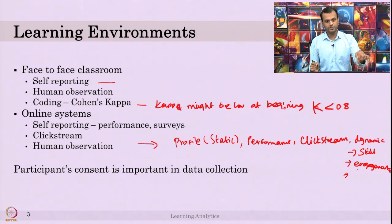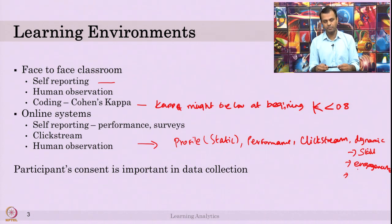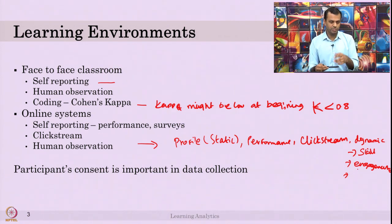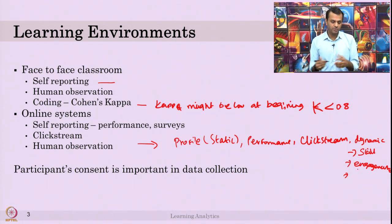Even in online systems, you do human observation — capturing videos of facial expressions, or data from eye trackers. If you have facial expression data, you may not be able to code it directly; you can ask students to self-report about their own emotions watching their own videos, or observers can observe facial expressions and code affective states. In any case, make sure you do Cohen's Kappa and the kappa score is more than 0.8. There should be no bias in your observation.